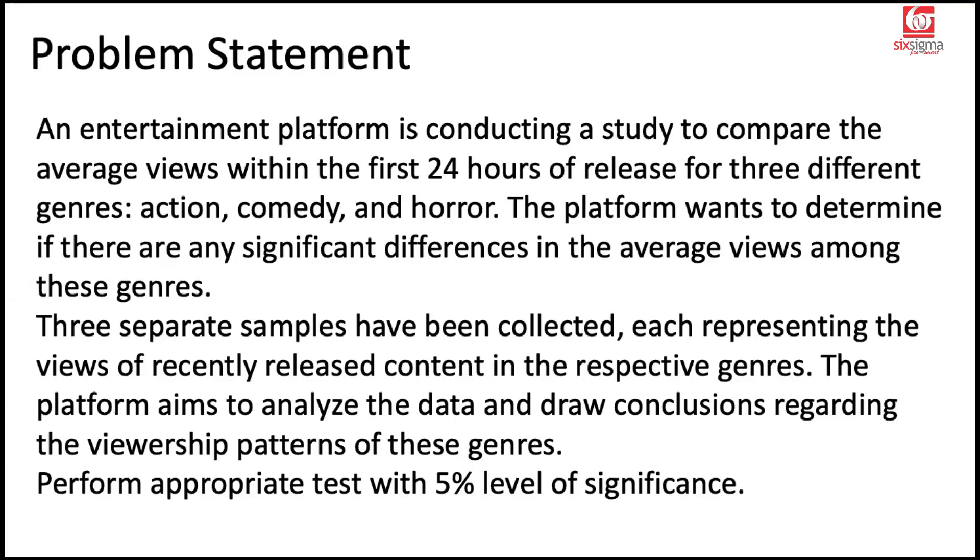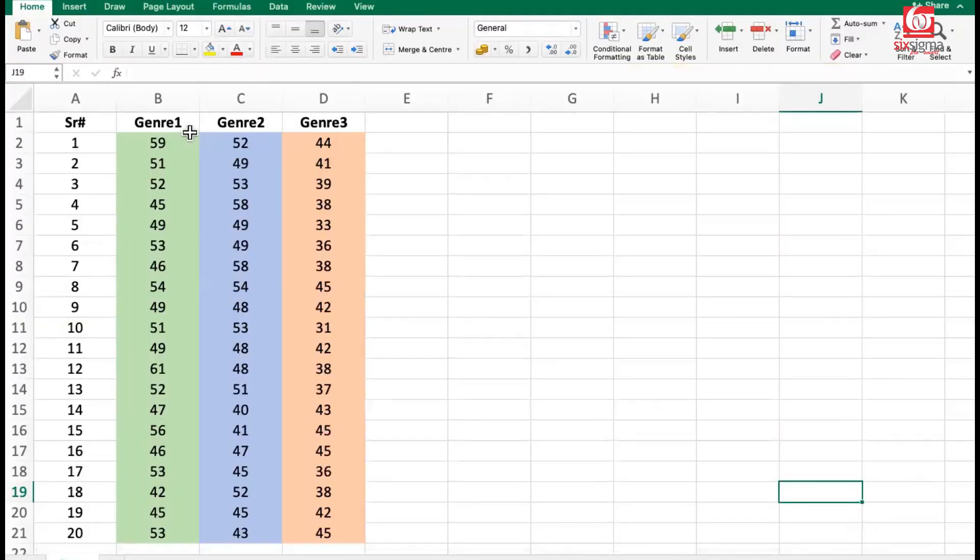Does this problem statement qualify for ANOVA? Of course, yes, because we are talking about three different genres. And for each genre, we have certain observations, which are views in thousands. Let's understand this with the help of data. Here is how our data looks like. We have some observations. These are views in thousands after a video for a particular genre has been released. Each column represents a specific genre. We seem to have the data for 20 videos from each genre, and these are the views captured in thousands.